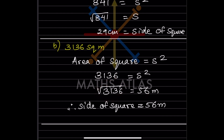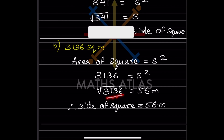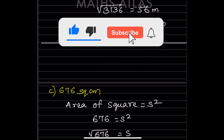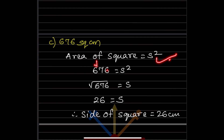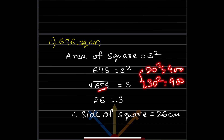For the next square with area 3136, the same approach applies — take the square root of 3136 to find the side. Similarly for 676: using the same formula, the square root of 676 is 26, because 20² = 400 and 30² = 900, so it is between 20 and 30. The units digit is 6, so it is either 24 or 26. The answer is 26 cm.